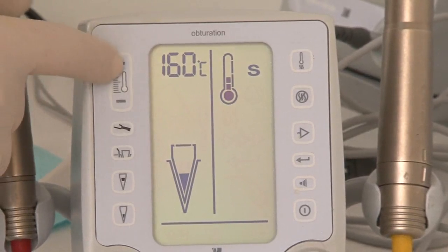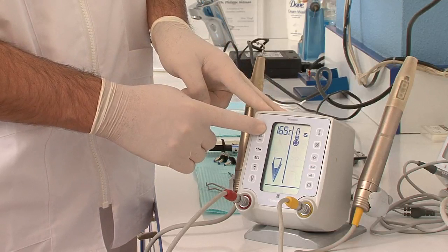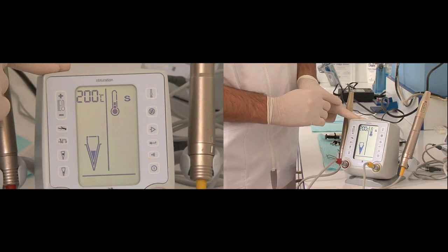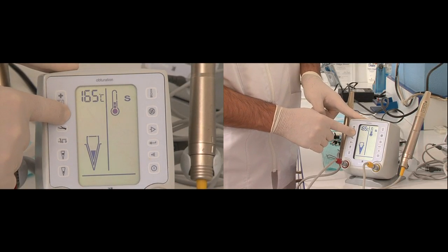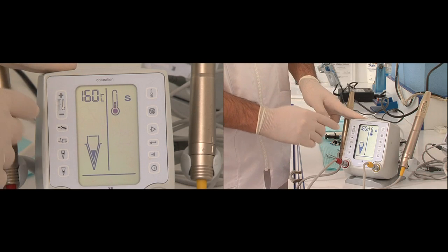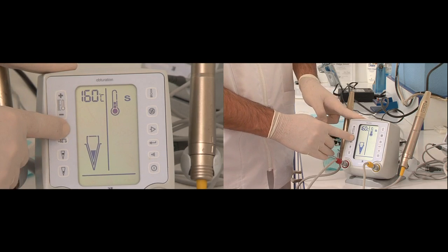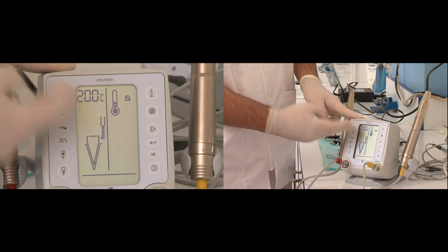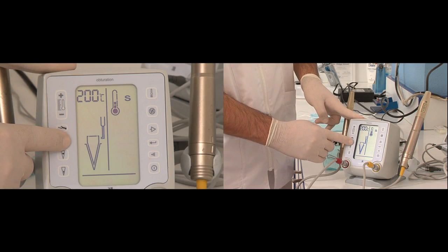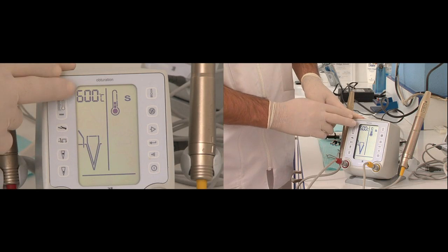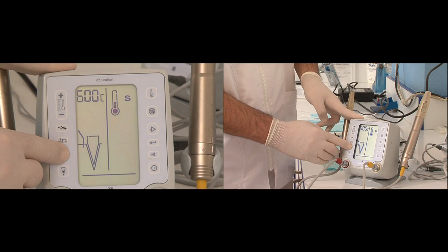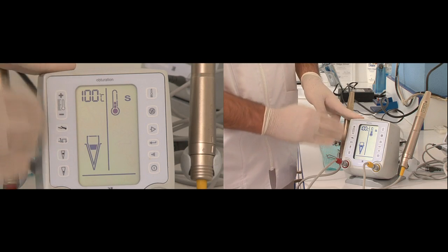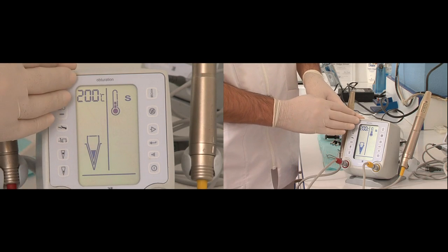For the System B we have the plus and minus. They are for digital control of the temperature. 200 degrees is set for gutta-percha and 160 degrees is set for RealSeal. The second button is for hot pulp testing. The third one is to do cautery and the temperature is 600 degrees. The fourth button is for backfilling and temperature is 100 degrees, and the last button is for down packing.